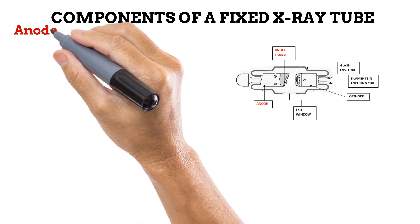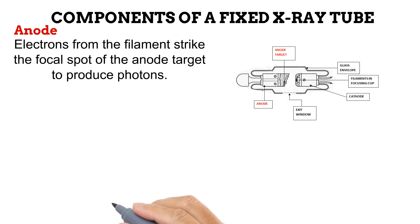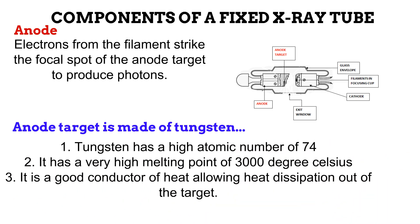Next is the anode. It is the positive side of the X-ray tube. It has a certain spot on its surface known as the focal spot or anode target, and it is this spot that electrons from the cathode filament strike to produce X-ray photons. The surface of the anode is made of tungsten for certain important reasons. First, tungsten has a high atomic number of 74. A high atomic number increases the chances of producing useful photons, because more interactions will occur between filament electrons and atoms of the anode. Secondly, tungsten has a melting point of 3000 degrees Celsius. The process of photon production is not efficient — only 1% of the electron's energy is converted to X-rays, while the remaining 99% is converted to heat. If tungsten didn't have such a high melting point, this heat could melt and destroy the anode target. Lastly, tungsten is a good conductor of heat, allowing heat to be easily conducted out of the tube.